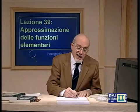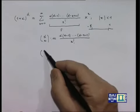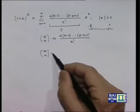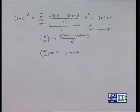Voglio dire che, una volta introdotto questo simbolo generalizzato, ove alfa fosse un numero naturale m, per tutti gli n più grandi di m questo coefficiente vale 0. Perché? Perché se conto un numero di interi decrescenti consecutivi maggiore di m, certamente fra questi fattori trovo 0. Quindi questa serie binomiale contiene come caso particolare la formula del binomio.